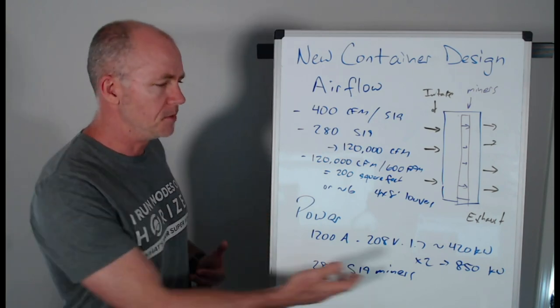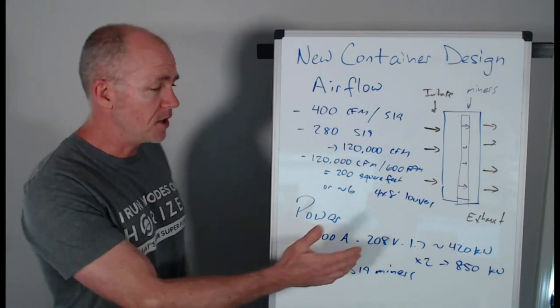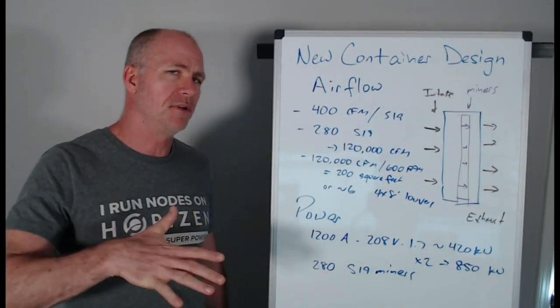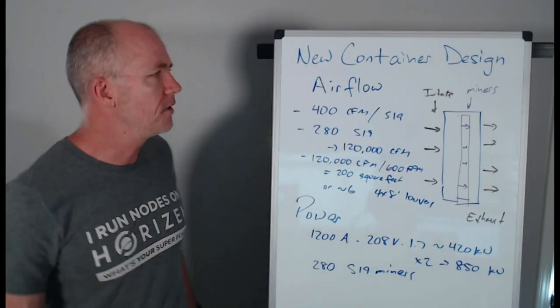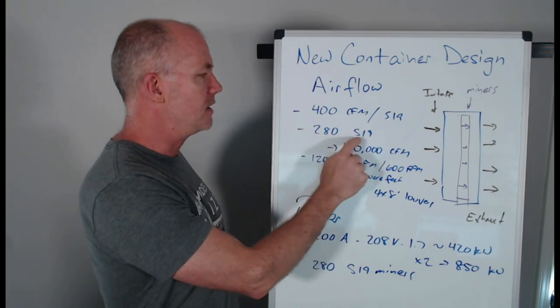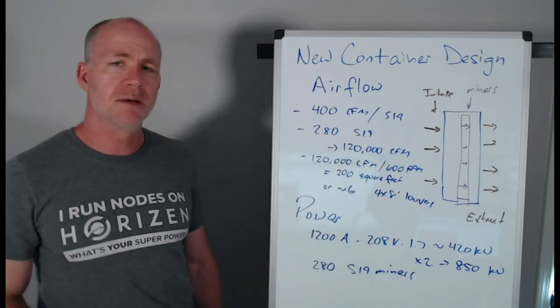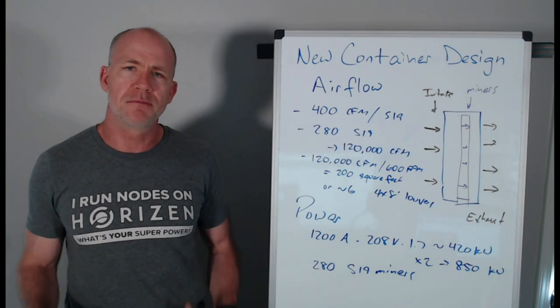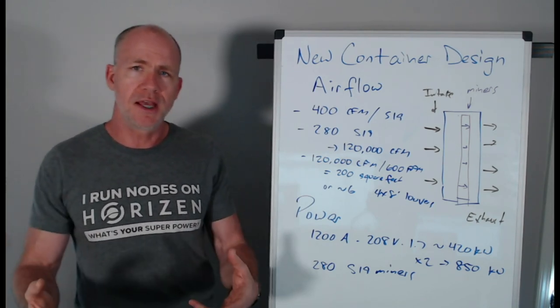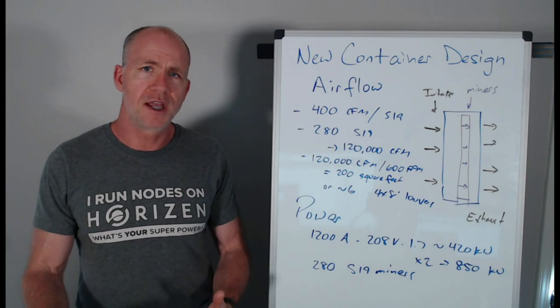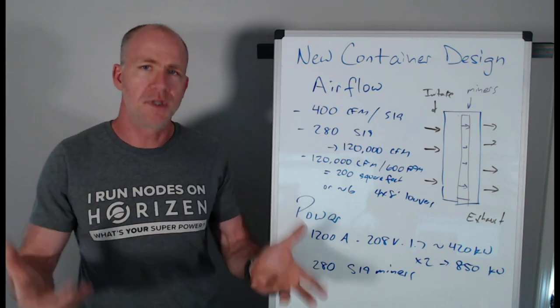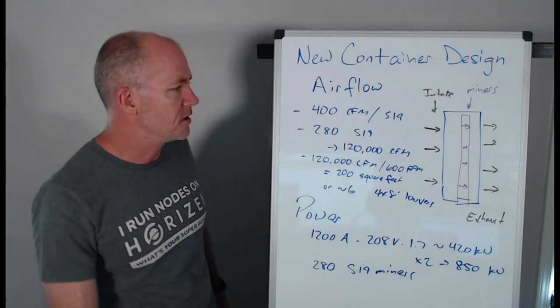So these are really rough numbers. So 1200 amps, 208 volts times 1.7 when we go from three-phase to single-phase because three-phase is a lot more efficient and we break it out. That gives us about 420 kilowatts max for each large 1200 amp panel. Now we got 200 of these and so we could theoretically do 850 kilowatts into this container. If it was 240 volts, you'd be up above a megawatt for a container design. But if we're talking about 850 kilowatts that we can supply, how many S19 miners really roughly is that? 280. Knowing that we have about 400 cubic feet per minute per S19 and 280 S19 miners, that really roughly comes out to 120,000 cubic feet per minute of airflow that we need to bring in.